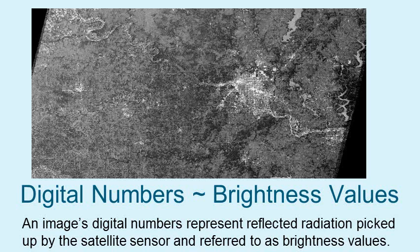On a very basic level, the digital numbers associated with each pixel in a satellite image refer to the amount of electromagnetic radiation reflected from the Earth's surface after it passes back through the atmosphere and is picked up by a satellite sensor. These values range from 0 to 255 for images collected by Landsat satellites 1 through 7.